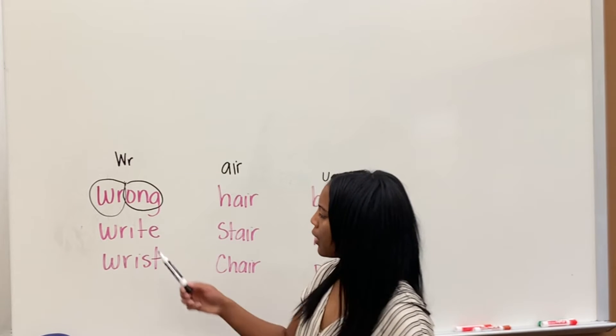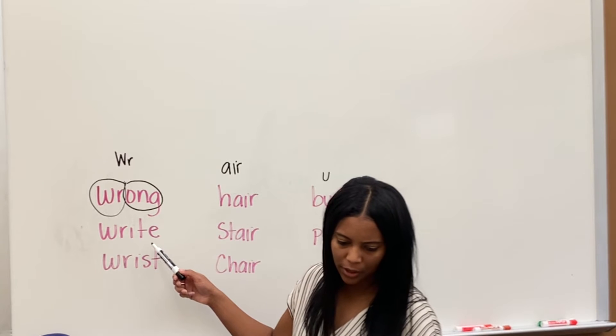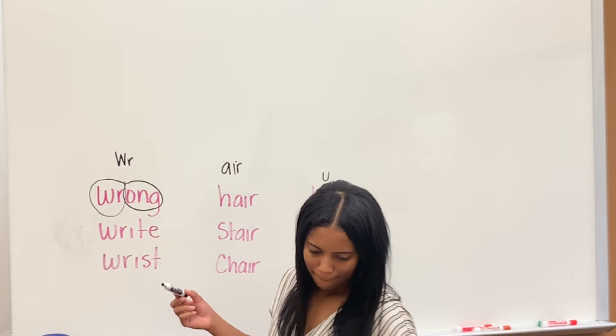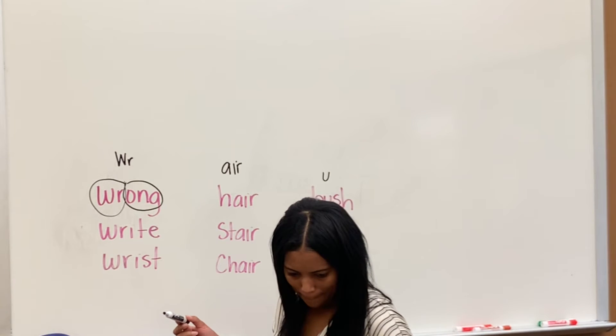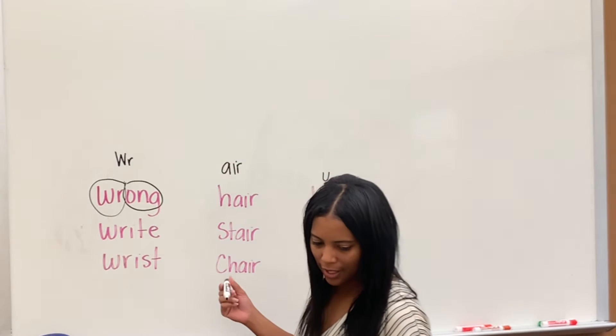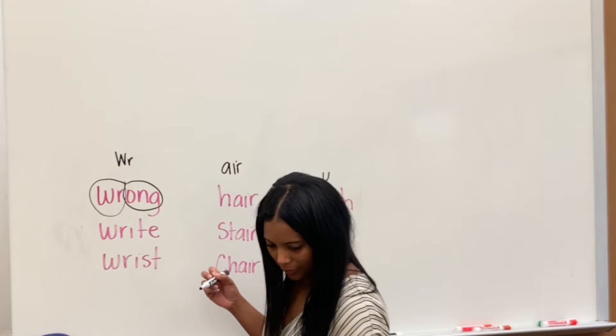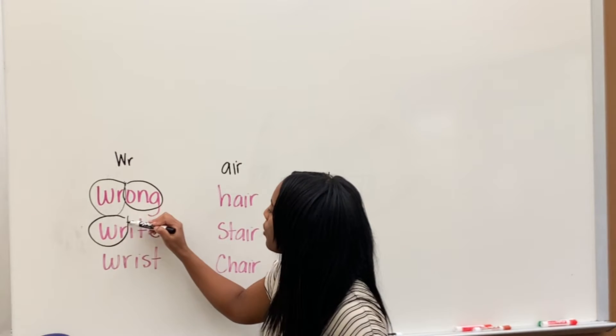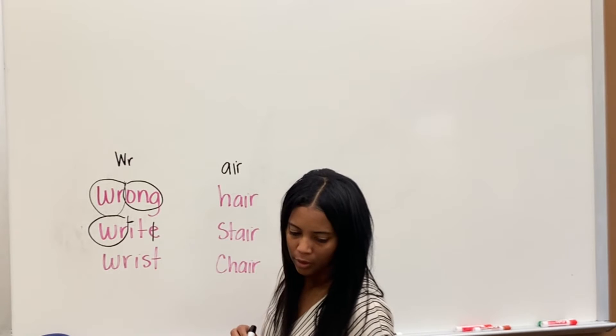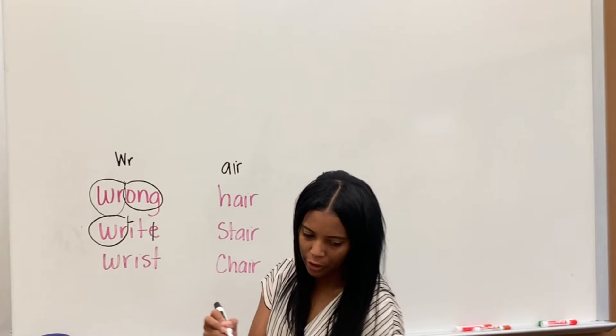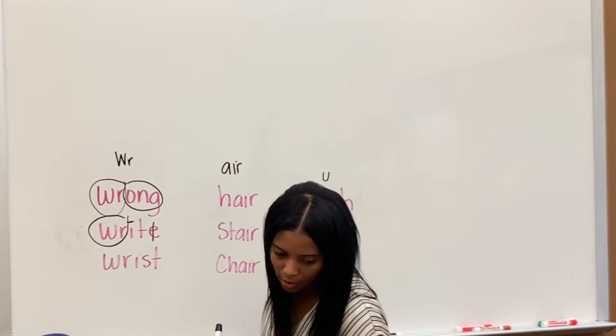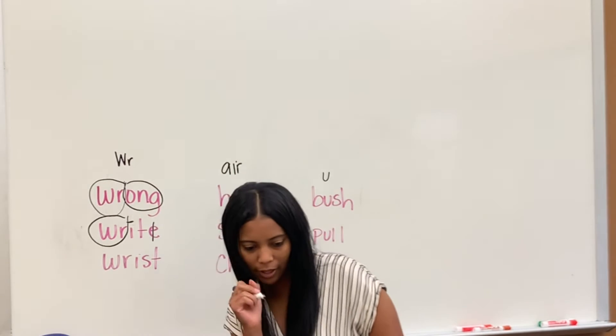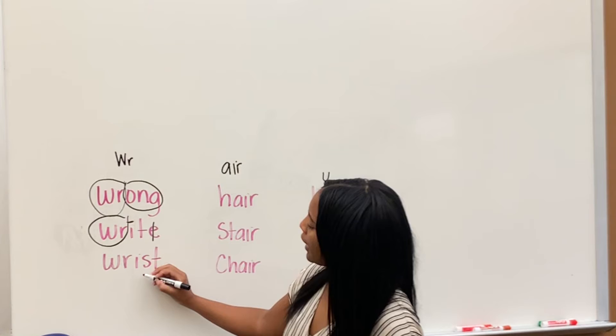Okay, next one. Can anyone tell me the sounds in this word here? Go ahead, Josiah. WR. Good, so WR, what's the word? Right. Right, like to write your name. Right is also a homonym, guys, because we have right, like if you turn to the right, and then right, like write your name. Okay, next one.